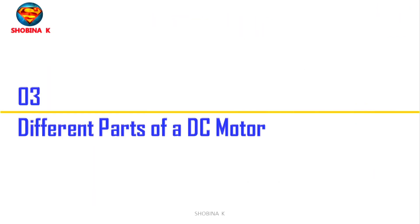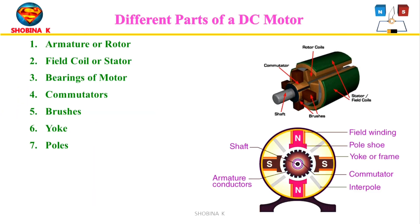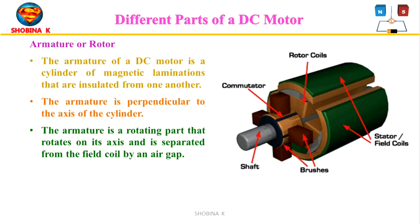The different parts of a DC motor include the armature or rotor, field coil or stator, bearings, commutators, brushes, yoke, and poles. The rotor is the rotating part of a machine — a moving component of an electromagnetic system in an electric motor, generator, or alternator. Its rotation is due to the interaction between the windings and the magnetic field, which produces a torque around the rotor's axis.